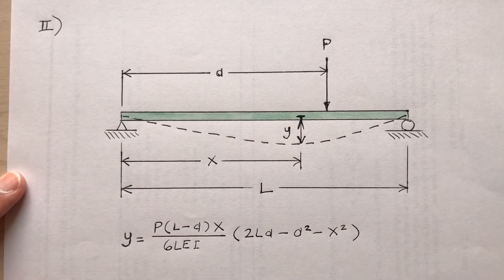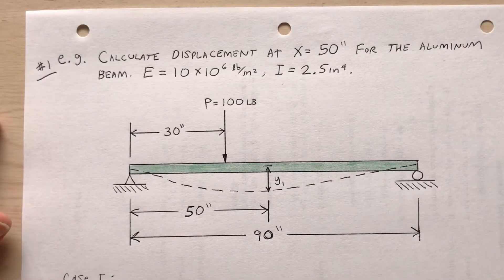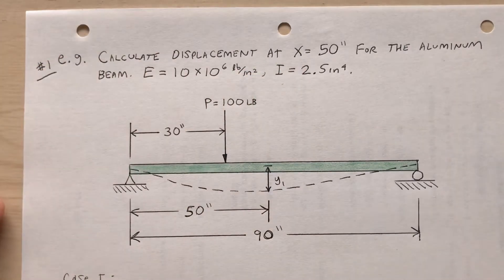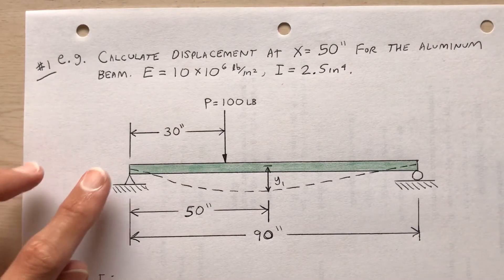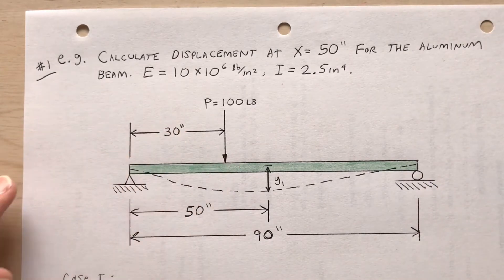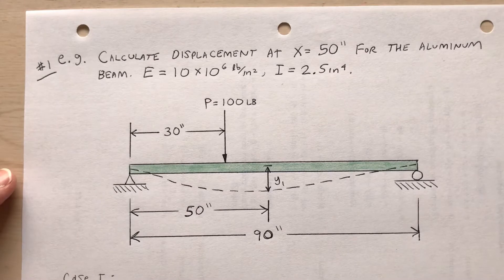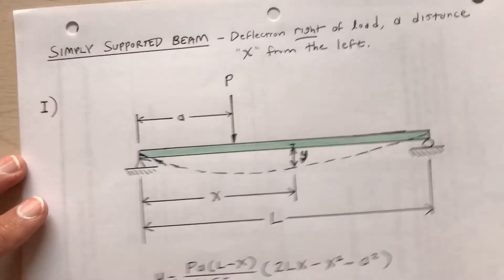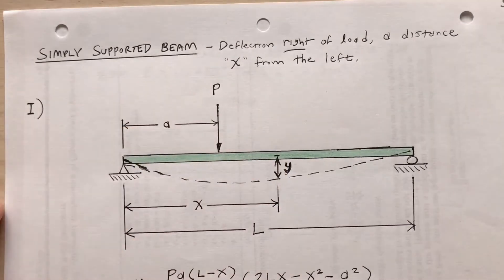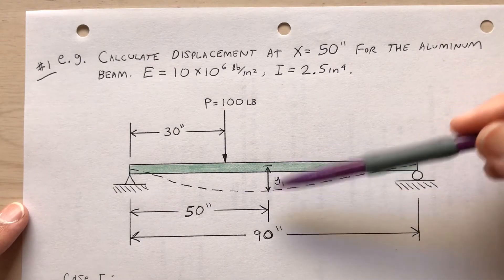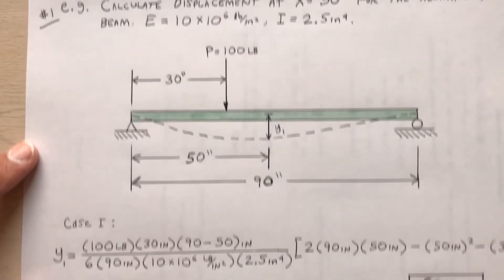Example: calculate the displacement at x equals 50 inches for an aluminum beam with given modulus of elasticity and moment of inertia. The beam is 90 inches long, with a 100-pound load at 30 inches. We want displacement at 50 inches. Since the applied load at 30 inches is to the left of the location of interest at 50 inches, this is Case 1.